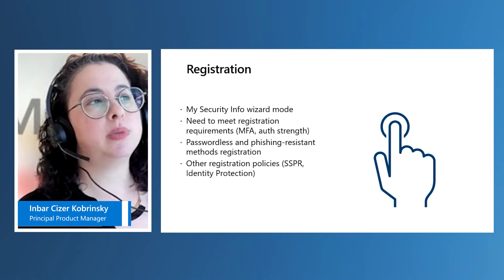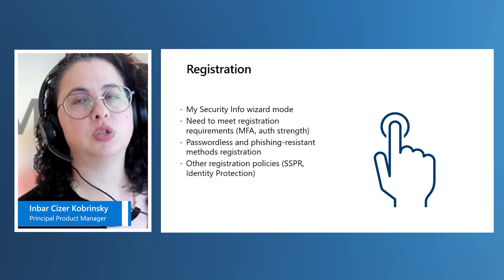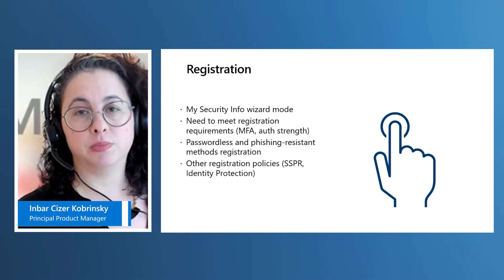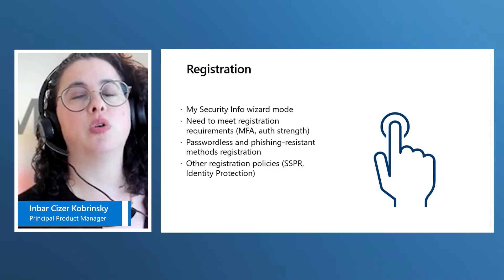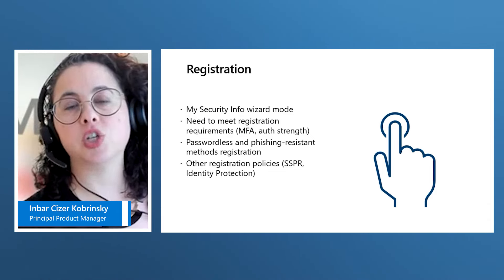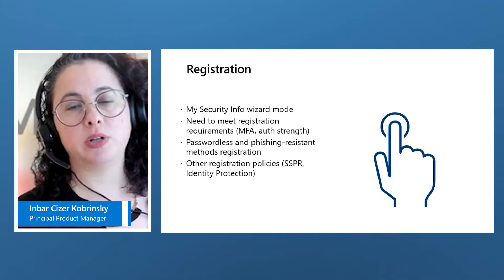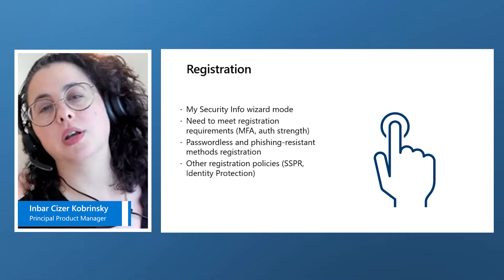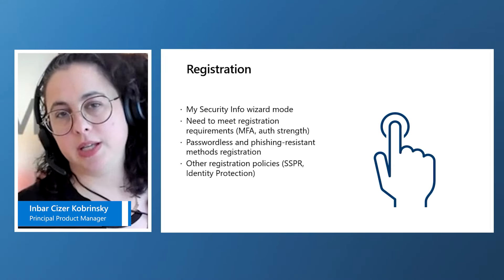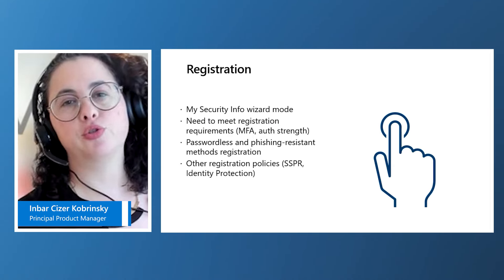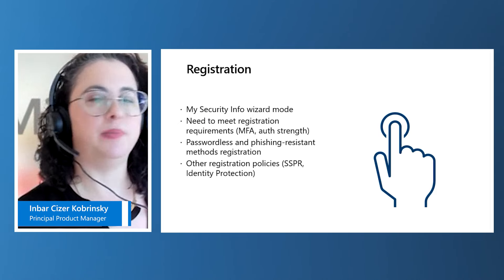Users will also need to meet the authentication strength requirement in order to register methods. For example, if you configure a conditional access policy with authentication strengths to only allow Temporary Access Pass and phishing-resistant methods for security info, they will have to use one of these methods to go and register another method. So for a new user, it's important to give them a Temporary Access Pass before they go and register their method — otherwise they're basically blocked from signing in.